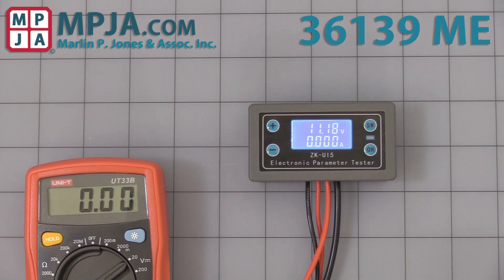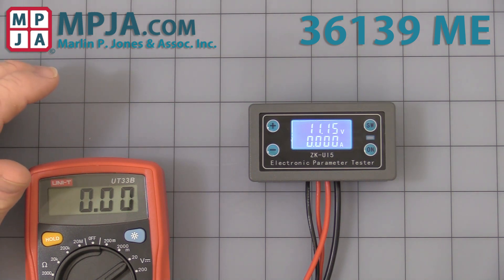Hello, today's video is on stock number 36139ME, the multi-purpose DC panel meter. I thought I'd make a video just showing you the unit itself and how to program it. I think that probably causes people the most problems with units like this. So let's get to it.